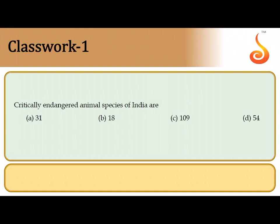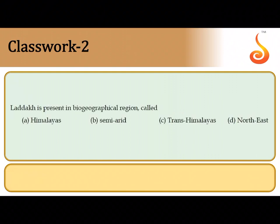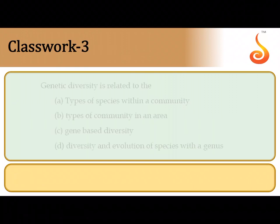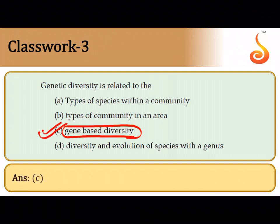About 31 different critically endangered animal species have been identified in India, so the correct answer is option A. Ladakh is present in the biogeographical zone of the trans-Himalayan range, so it is option C. Genetic diversity is the diversity that exists within members belonging to the same species, because not all of us are identical in terms of genetic constitution — it is entirely based on gene-related diversity.